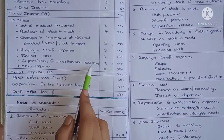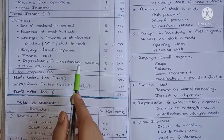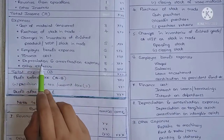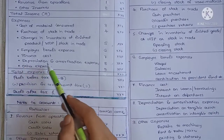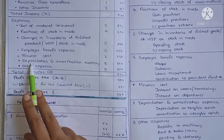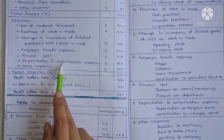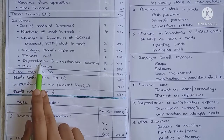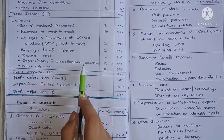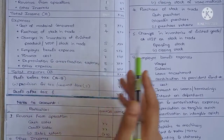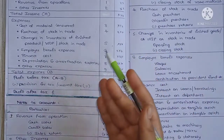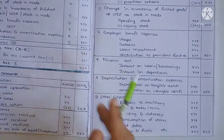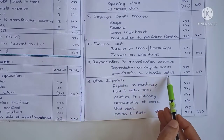The next heading is depreciation and amortization expense. Depreciation means the decrease in value of an asset. Depreciation is calculated on tangible assets, and amortization is calculated on intangible assets.